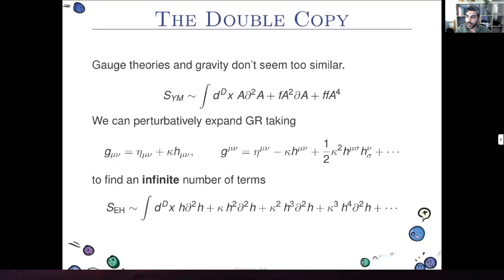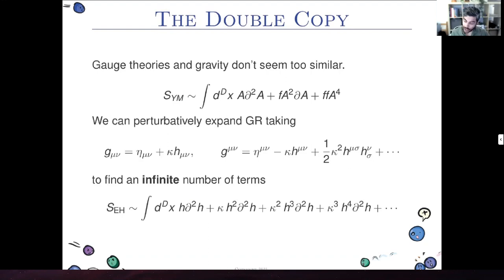The double copy is a relationship between gauge theories and gravity, where in some sense you can think of gravity as the square of the gauge theory. Gauge theories and gravity are not that similar in many ways. For example, the action of Yang-Mills just stops at fourth order, whereas general relativity has an infinite number of terms. So it's quite hard to see how I can possibly make the claim that one theory is the square of the other.